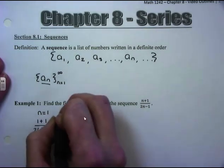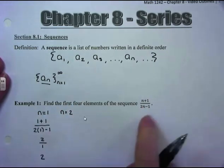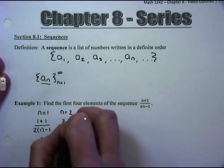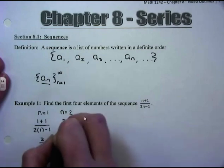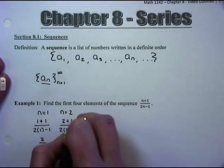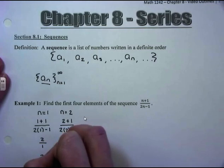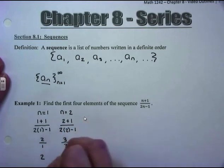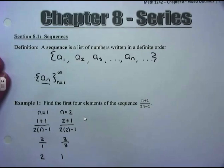For the second term, when n is equal to 2, in the numerator we have 2+1, and in the denominator 2×2−1. So the numerator is 3 and the denominator is 4−1, which is also 3, meaning our second term is 1.